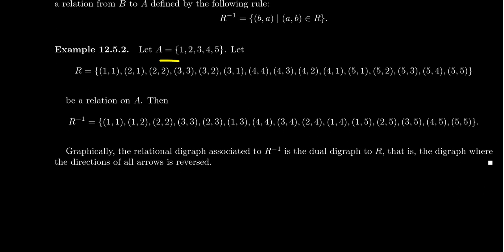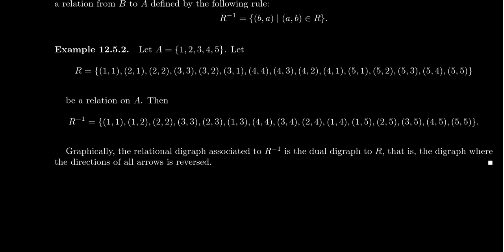Let's take a relation on the set A = {1, 2, 3, 4, 5}. So it's a relation from A back into A. R contains the ordered pairs: (1,1), (2,1), (2,2), (3,3), (3,2), (3,1), (4,4), (4,3), (4,2), (4,1), (5,1), (5,2), (5,3), (5,4), (5,5). This relation is just the greater-than-or-equal-to relation: 1 ≥ 1, 2 ≥ 1, 2 ≥ 2, etc. That's all this relation is on the set of five elements.